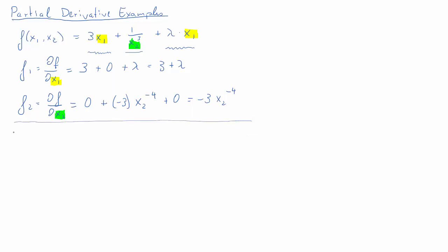So that was our first example. Let's go through a second example. I'll use a different function name g, and instead of x1 and x2 I use x and z as my variables — just so you understand that functions aren't always called f and variables can take all sorts of names. This function is 10 times x to the half times z to the half.